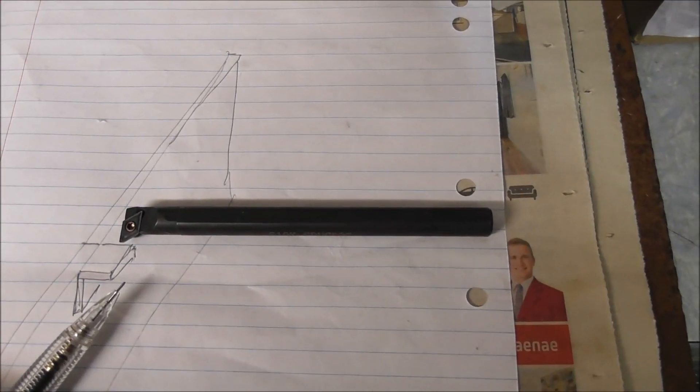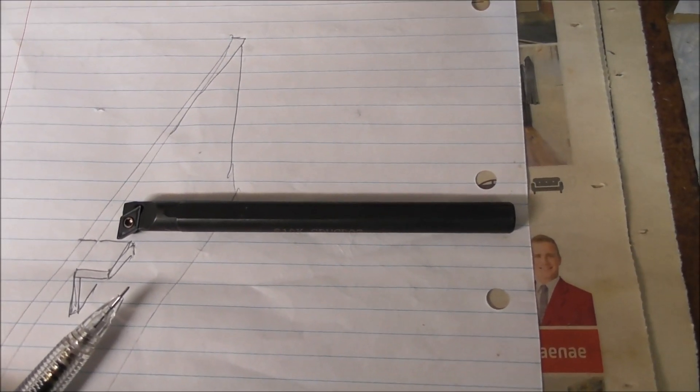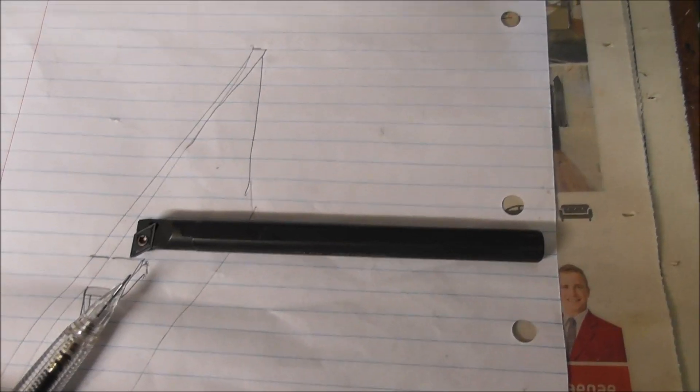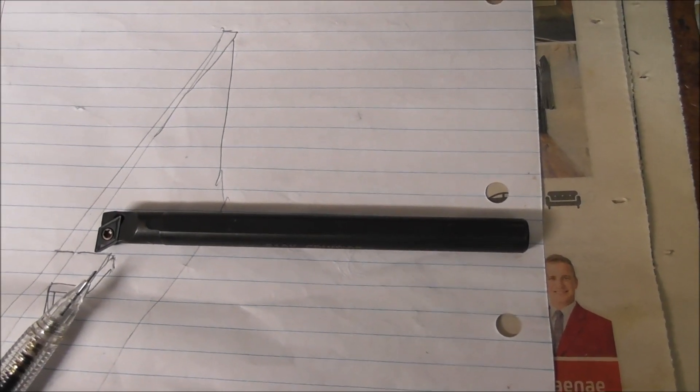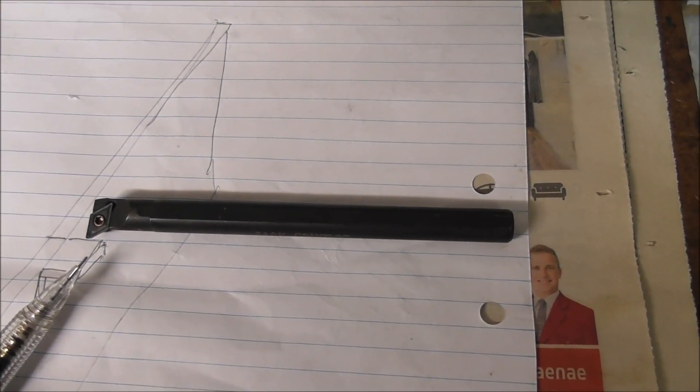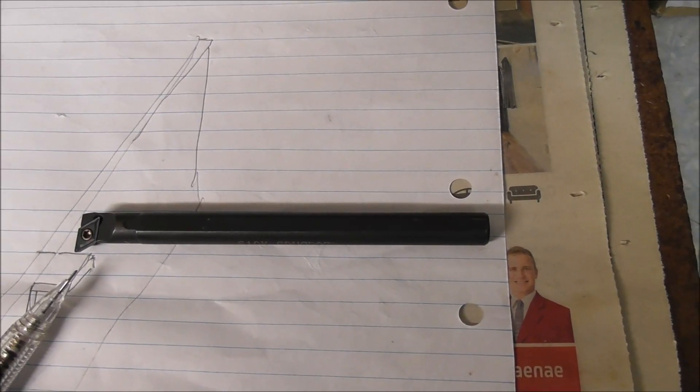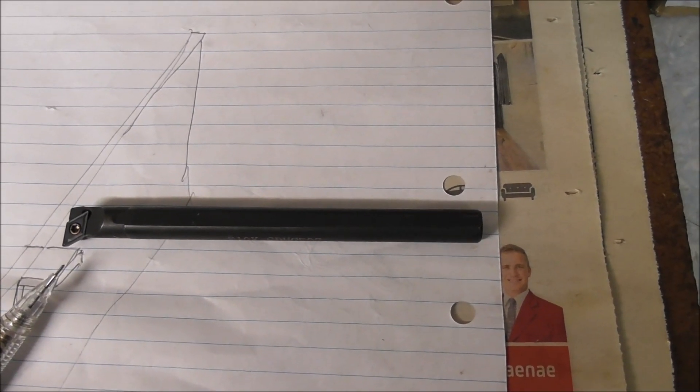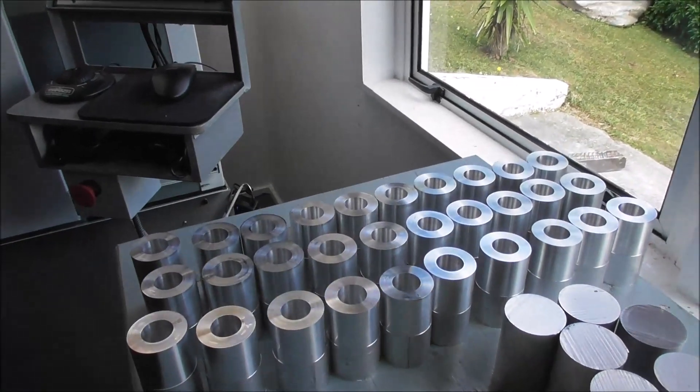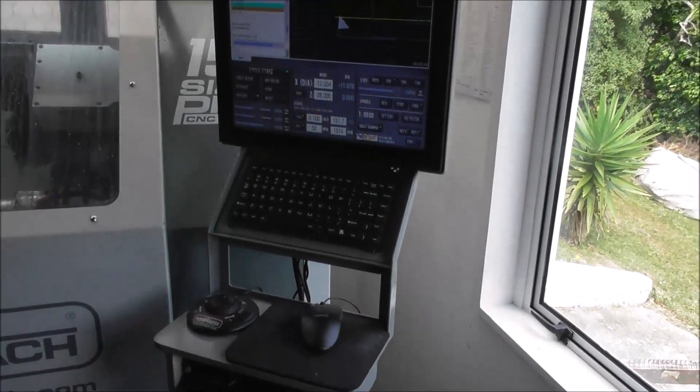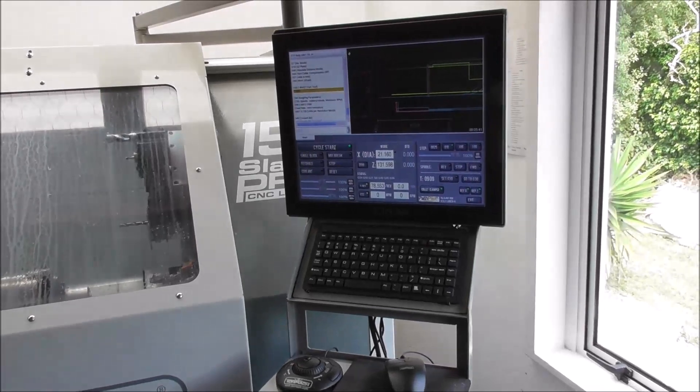Because remember, a probe for lathe tool setting is a very different beast to a probe for setting your work offsets in a milling machine. A probe for a lathe has to set the finished size of the work. That's not the case in a mill—you're just setting your work offsets. But in a lathe you're attempting to use the tool setter to set the size of the part, and that is a much higher end requirement. It's probably too much to expect of a low-end value machine. Not that I'm knocking Tormach in any way here—the Slant Pro 15L is a brilliant productive little machine. We just need to be realistic about our expectations of it.